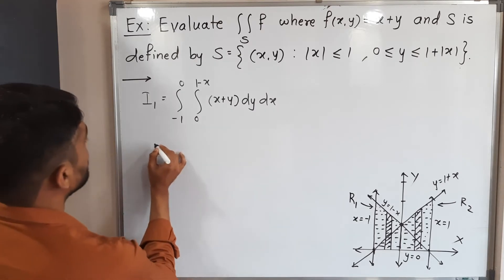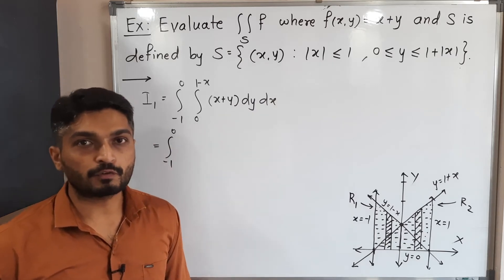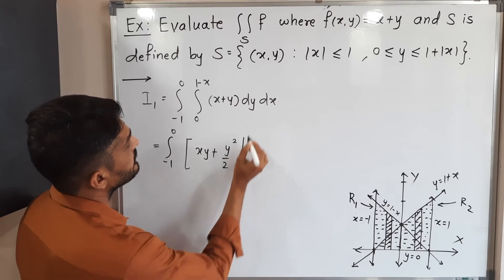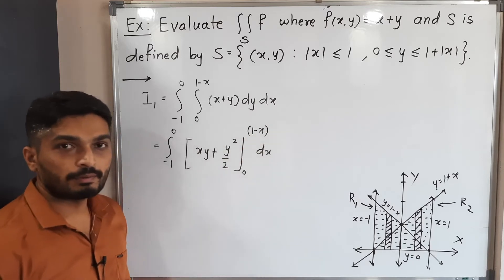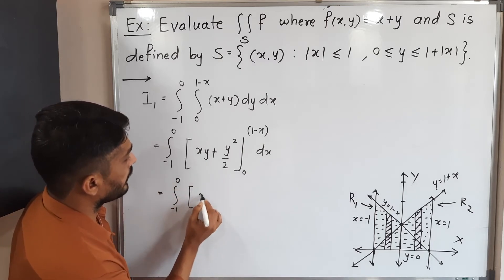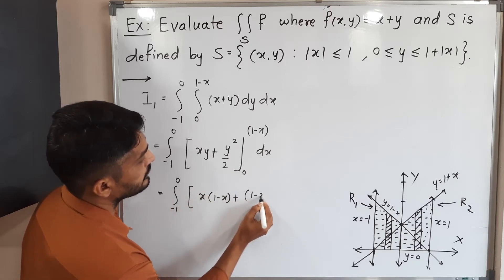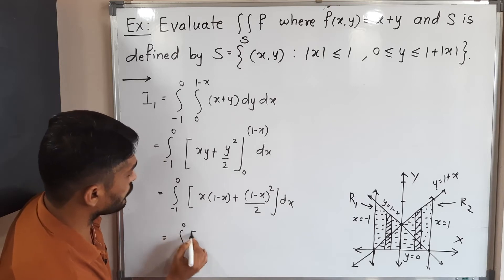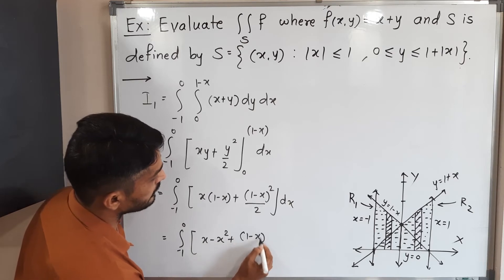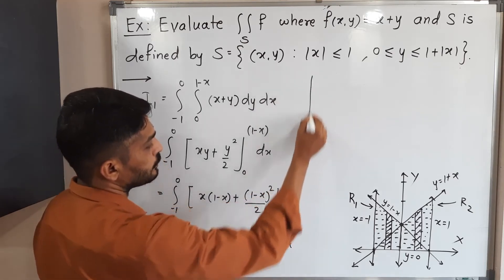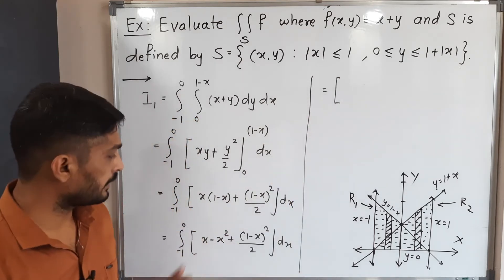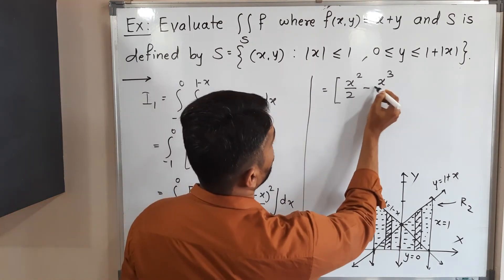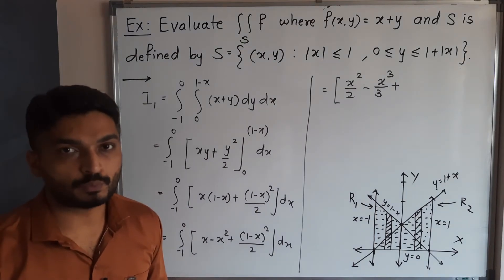Integrating the inner integral with respect to Y — treating X as constant — integration of X gives XY, integration of Y gives Y squared by 2, evaluated from 0 to 1 minus X. Putting in the upper limit: X(1 minus X) plus (1 minus X) squared by 2. Putting 0 gives 0, so we have the integral from minus 1 to 0 of X minus X squared plus (1 minus X) squared by 2, dX.